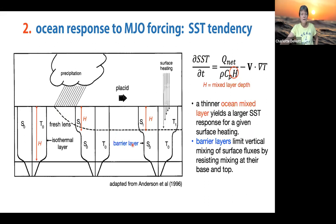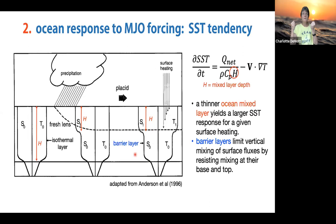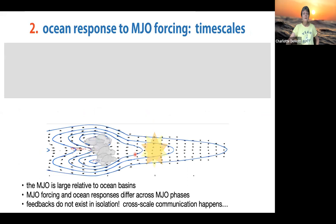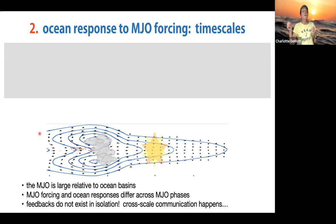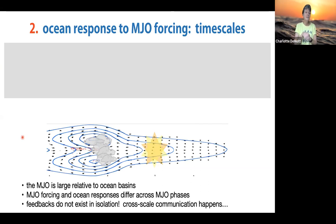I'll have some discussion questions in blue throughout the talk—just things to think about, no quiz. MJO is large relative to ocean basins, so MJO forcing and ocean responses differ according to where you are in the MJO phase. I'll list a series of different timescales, but remember these feedbacks do not exist in isolation—cross-scale communication happens all the time.